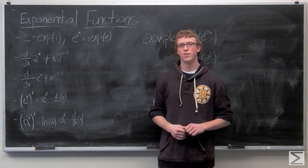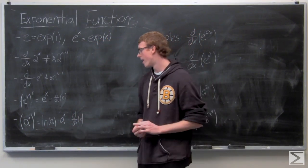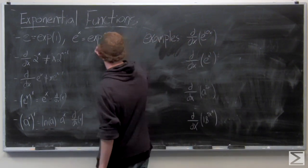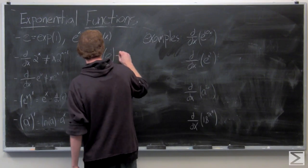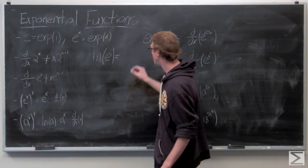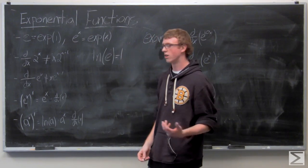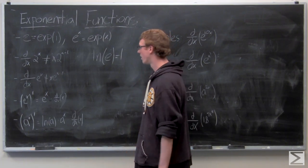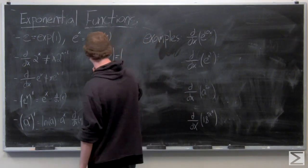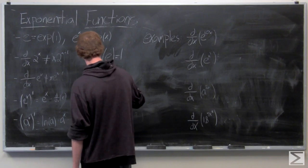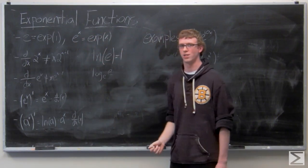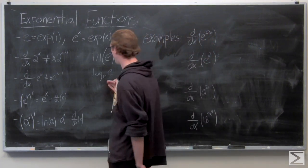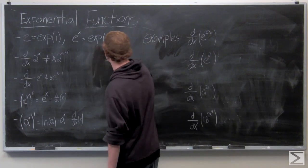We'll take a look at derivatives of the natural logarithm in the next video, but know that the natural logarithm is just log base e, and the natural log of e is 1. They work hand in hand and are a lot cleaner to work with than a general logarithm. Typically, ln — natural log — is a lot easier to work with.